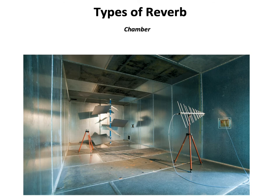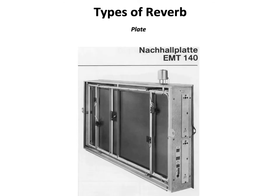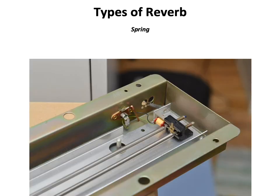If a studio couldn't dedicate that much space for reverb, they might use a plate reverb, made famous by EMT. Basically, it is a wooden box with a metal plate suspended in it — the reverb signal is sent from the console into the plate, it vibrates the metal, and is picked up by microphones and returned to the console. This is a classic reverb for vocals and snare hits. An even smaller type of mechanical reverb is the spring reverb, where sound is sent to springs, the springs vibrate, and the sound is returned to the direct signal — often found in guitar cabinets.